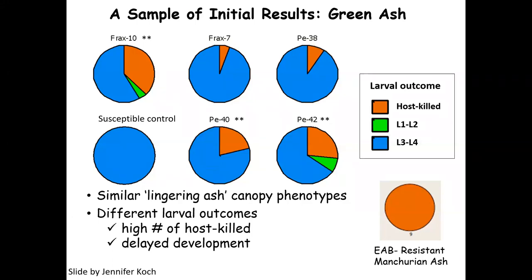Looking at some of Jennifer's initial results — each pie chart represents one tree. The lower left is the susceptible control, completely blue because you've got stage three or four larvae. The orange is what we want to see — those are the ash borers that were killed by the trees. We see that some of these trees killed a significant proportion of the emerald ash borer larvae. One tree, PE42, actually slowed down the growth of some of the larvae. On the lower right, you see the emerald ash borer-resistant Manchurian ash from China — that one kills all of the ash borer larvae. None of these are quite as resistant as that Asian Manchurian ash, but they may have enough resistance to have better survival.